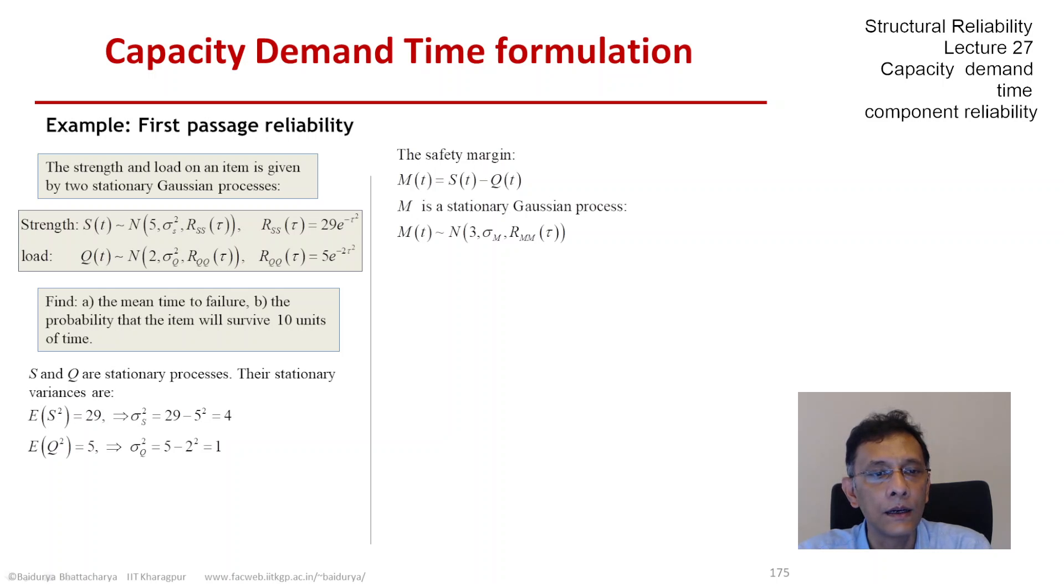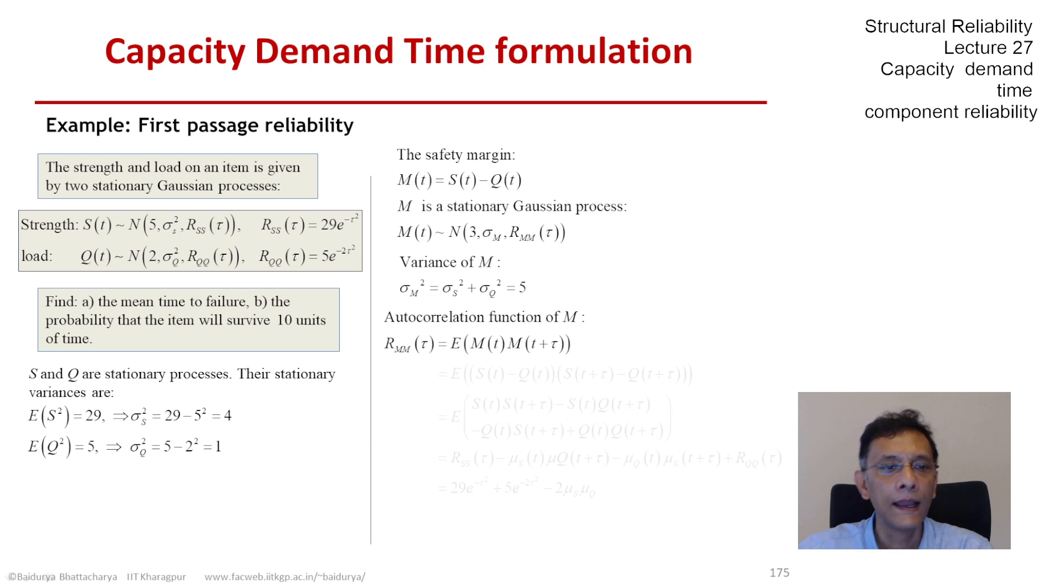The mean is 5 minus 2, which is 3, and the standard deviation is sigma_M, and the autocorrelation function is R_mm at lag tau. So let us find them. The variance of M is the variance of S plus the variance of Q.